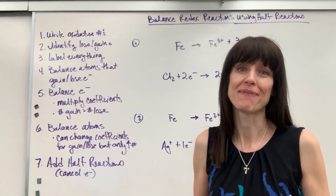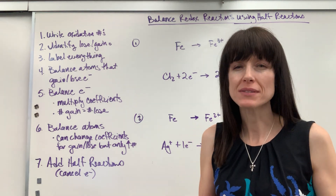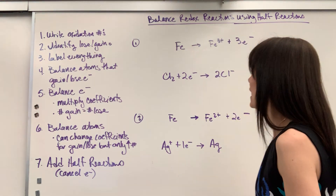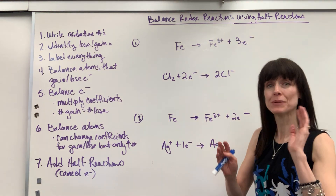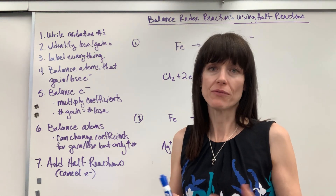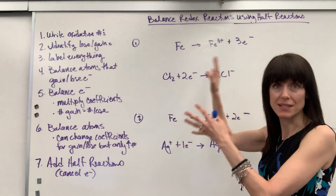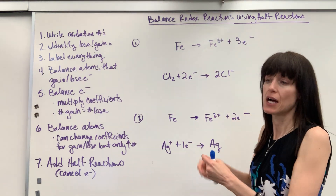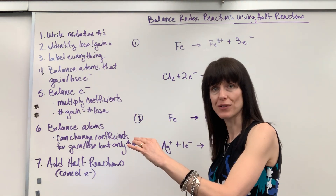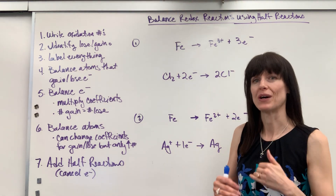Hi, now I'm going to show you how to balance redox reactions using the half reaction method. We use this a lot, especially when dealing with electrochemical cells and making batteries. This is going to be similar to the oxidation number method, except we've broken apart the section that's reduced and the section that's oxidized — looking at just each half of the reaction — but we follow a lot of the same steps.